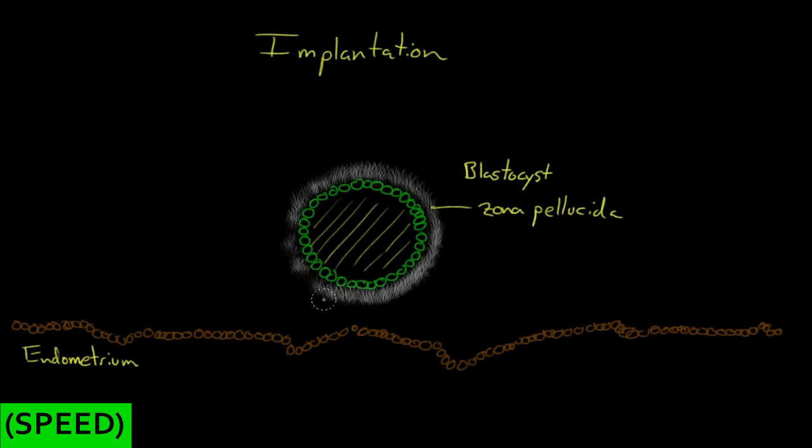Well, good thing, about this time, your zona pellucida is starting to finally disintegrate away. So you can see it's starting to fall apart. And your outer cells are becoming exposed. You're hatching out of your zona pellucida.